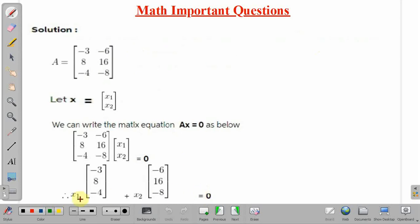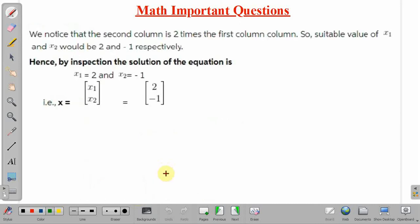If this will be 2 and this will be minus 1, if we multiply 2 into minus 3, it will be minus 6, and if this is minus 1, then minus 6 into minus 1 will be plus 6. So minus 6 plus 6 will be equal to 0.